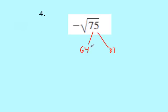Well, it's 11 away from 64 and it's 6 away from 81. So we're going to use the square root of 81, which is, our answer is 9. So our answer is about negative 9.